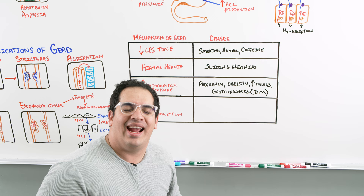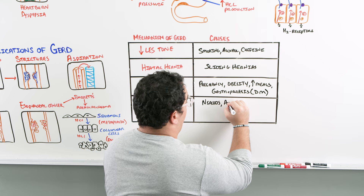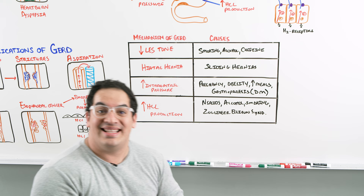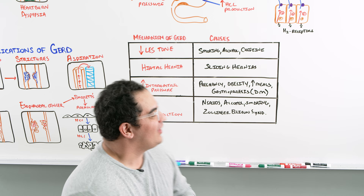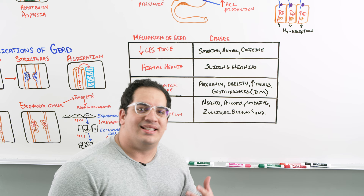What increases hydrochloric acid production? NSAIDs, alcohol, smoking, and a rare disease called Zollinger-Ellison syndrome — a rare disorder where a pancreatic tumor pumps out gastrin, which cranks up hydrochloric acid production.